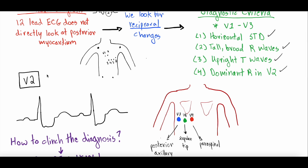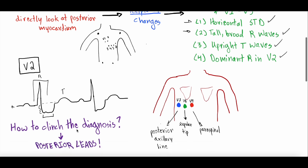Looking at a drawing of V2: first, you can see a horizontal ST depression — the ST segment drops below the isoelectric line and runs horizontally. Second, there's a tall, broad R wave. Third, the T wave is upright. And fourth, the R wave is dominant — quite large in V2. These findings together are suggestive of a posterior STEMI.